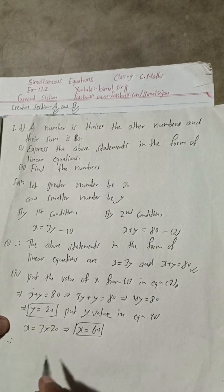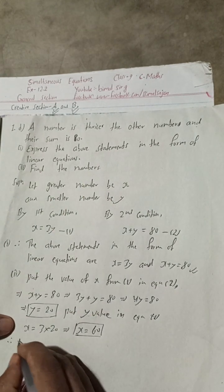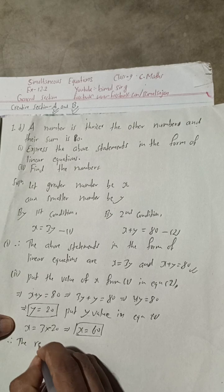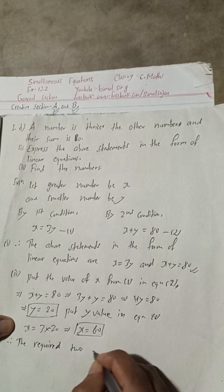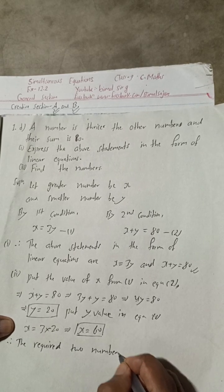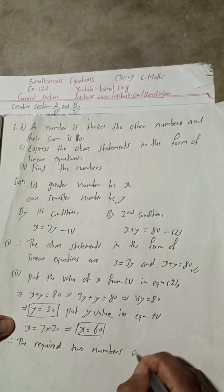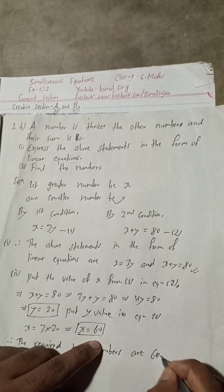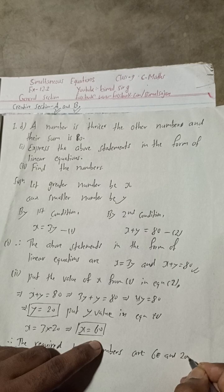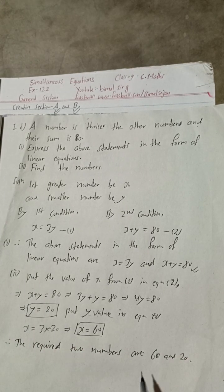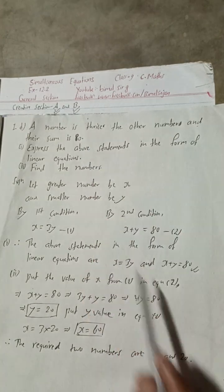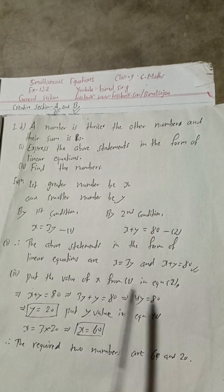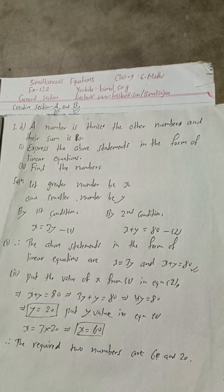Therefore, the required two numbers are: the greater number is 60 and the smaller number is 20. When we add these, we will get 80, and the greater number is three times the smaller one. This is the required solution of this question.